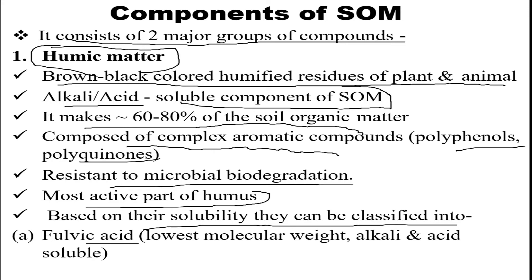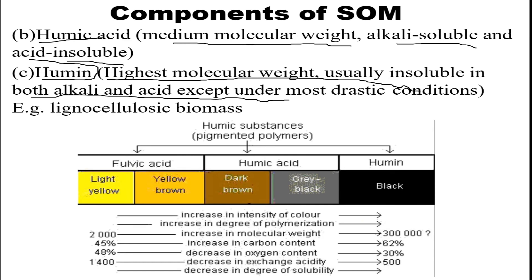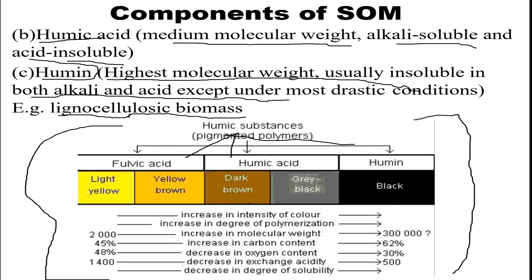Humic matter is the most active part of humus, with the highest percentage in SOM, and is very useful for cultivation. Its acids are classified as: fulvic acid, which has the lowest molecular weight and is alkali and acid soluble; humic acid, which has medium molecular weight, is alkali soluble and acid insoluble; and humin, which has the highest molecular weight and is insoluble in both alkali and acid except under drastic conditions — for example, lignocellulosic biomass. As seen in the image, these are further classified by color and solubility.